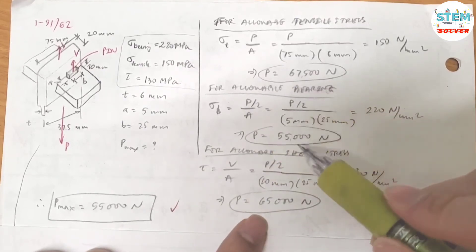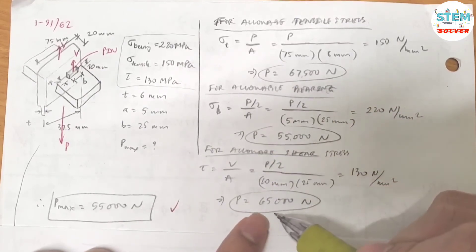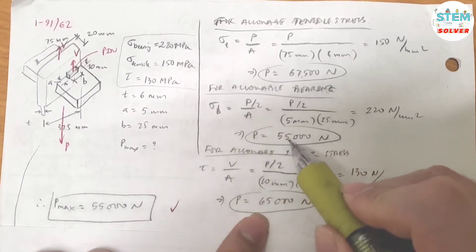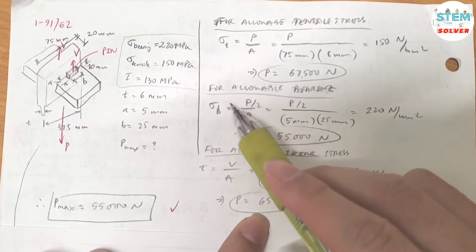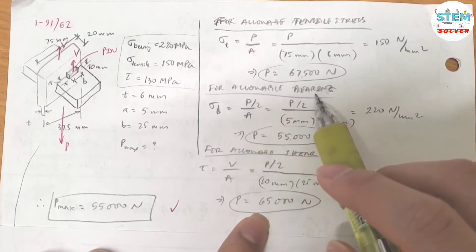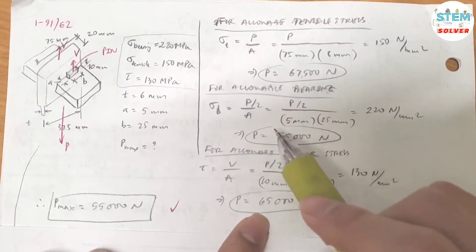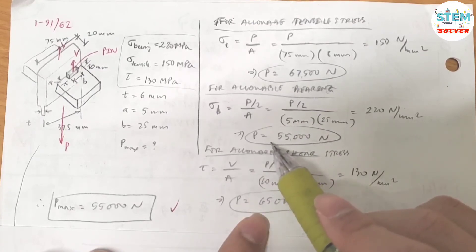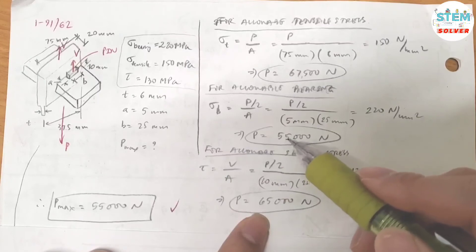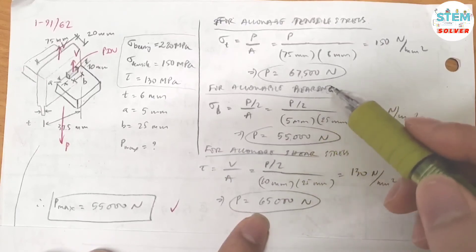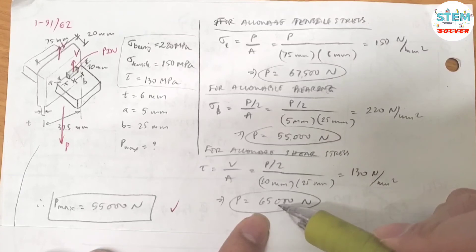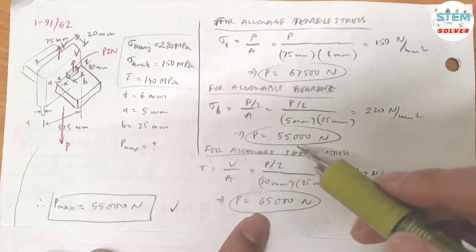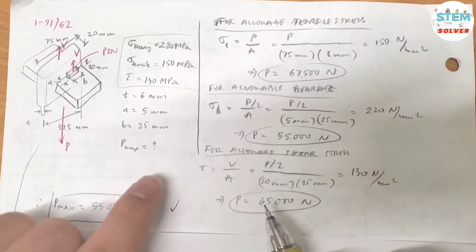Comparing the three cases: P from tensile stress is 67,500 N, from bearing stress is 55,000 N, and from shear stress is 65,000 N. When P reaches 55,000 N, it reaches the allowable bearing stress and the system will break if you apply more force. So the maximum allowable load is P equals 55,000 N.